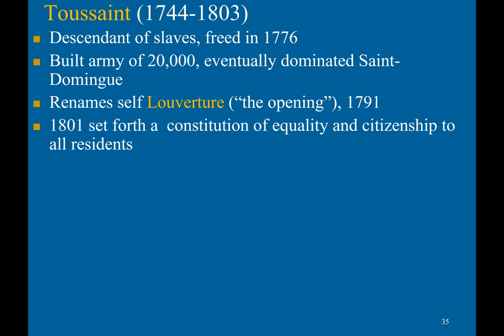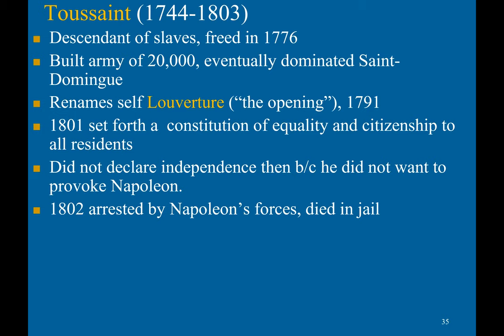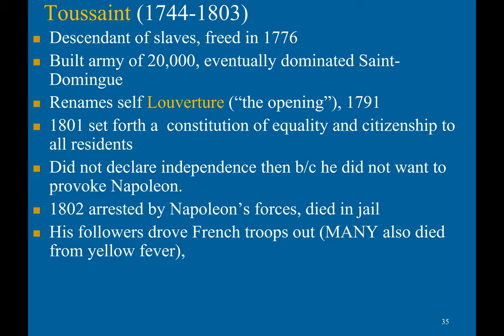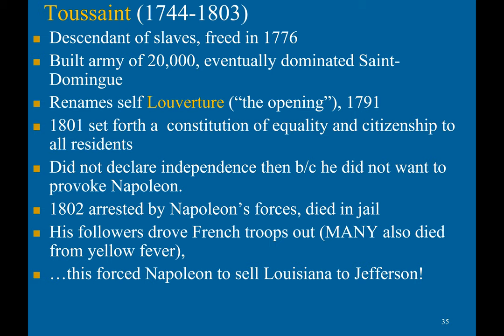In 1801, Toussaint set forth a constitution granting equality and citizenship to all residents. He did not declare independence because he did not want to provoke Napoleon, but that didn't stop Napoleonic forces from arresting him in 1802, after which he died in jail. His followers managed to drive French troops out — helped also by the fact that many French died from yellow fever. This forced Napoleon to sell Louisiana to Jefferson. In 1803 and 1804, Haiti declared independence.